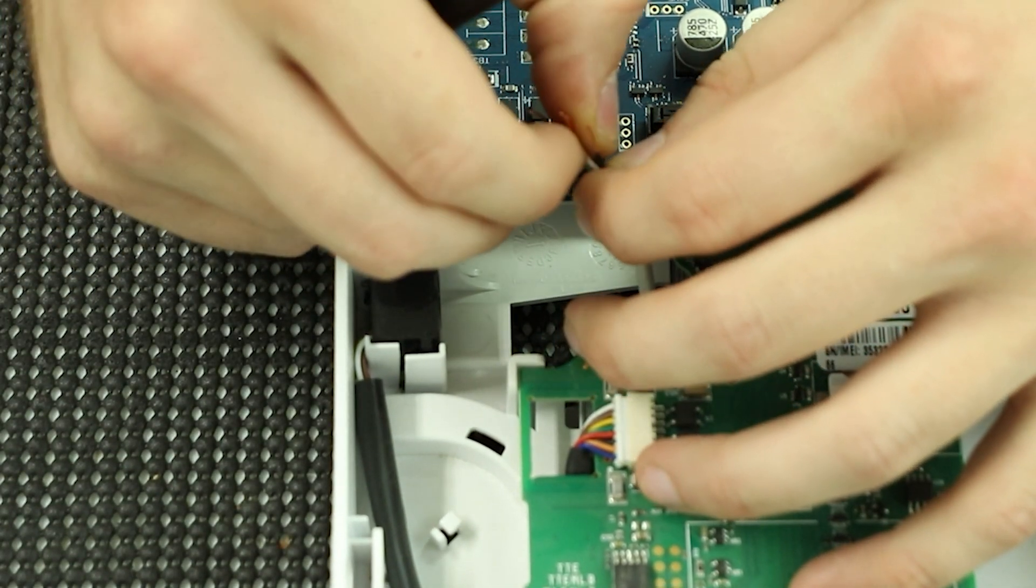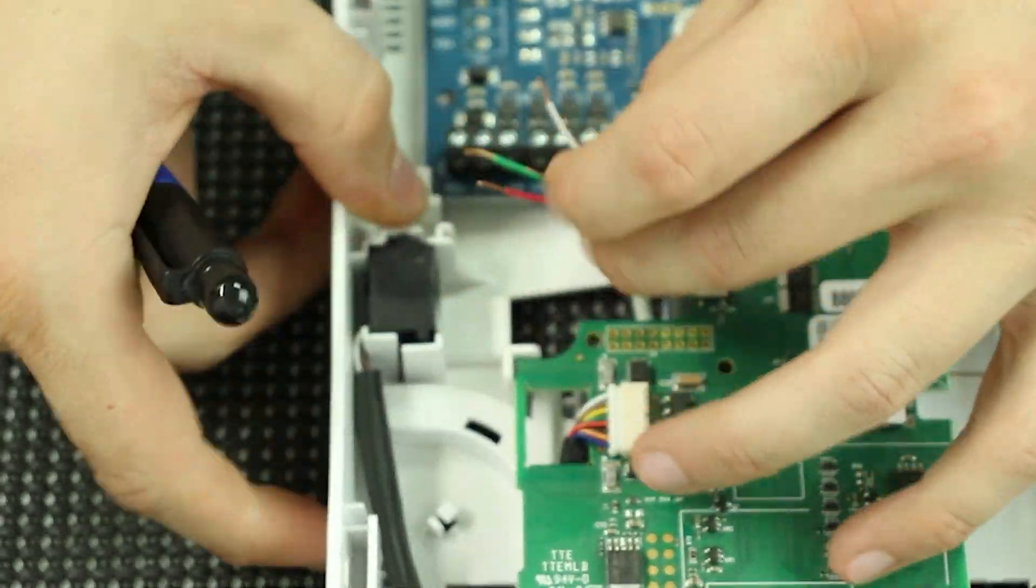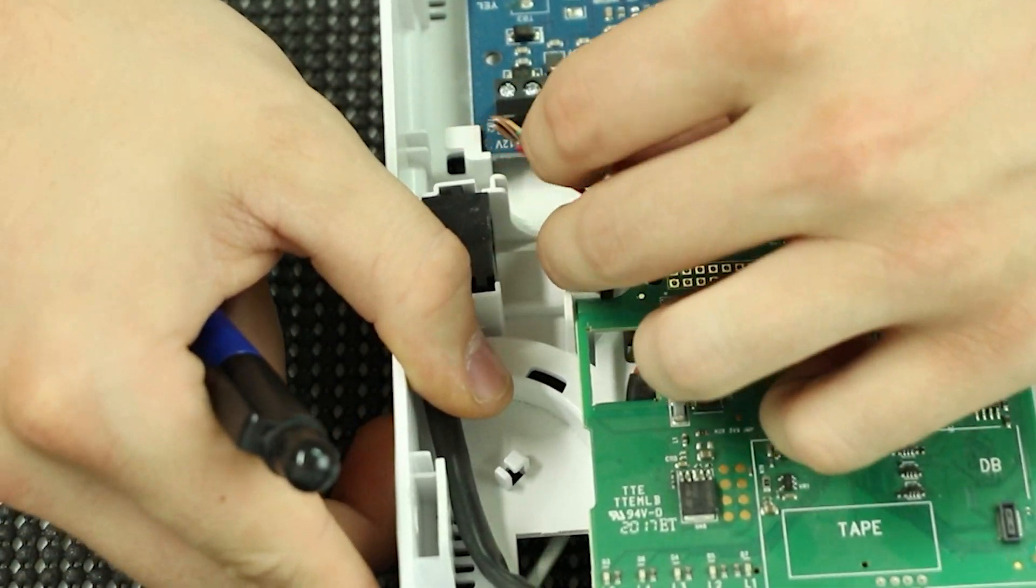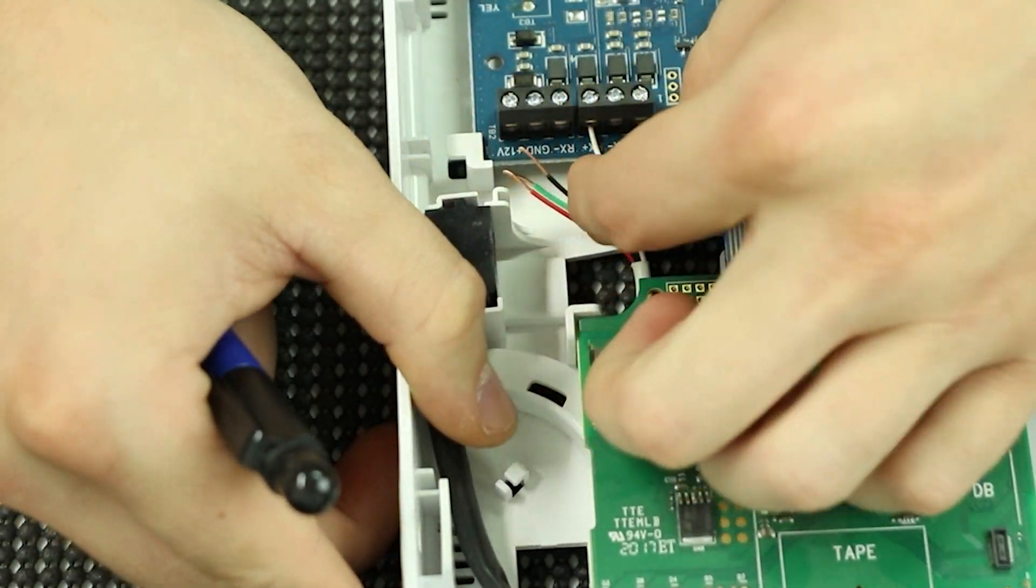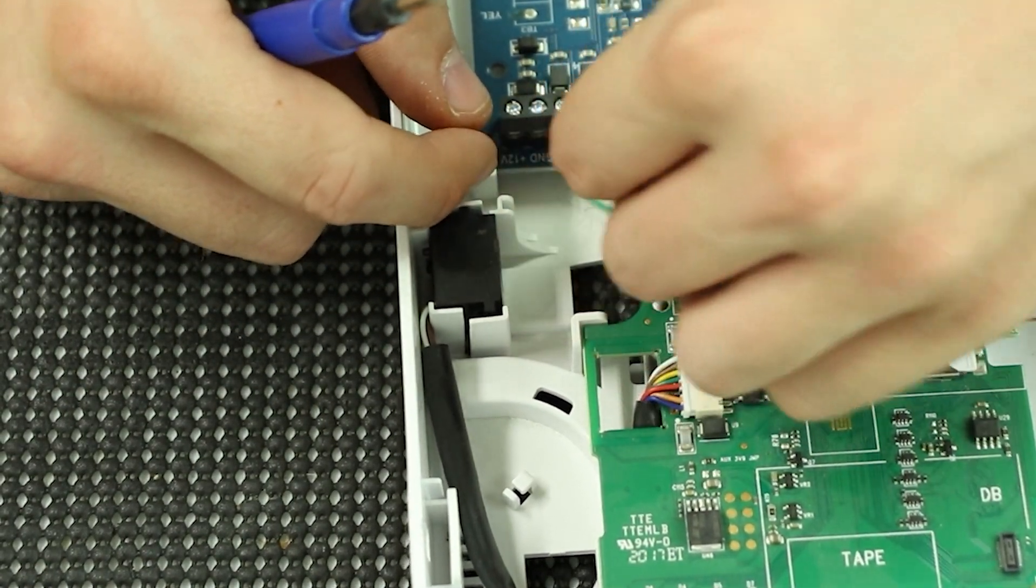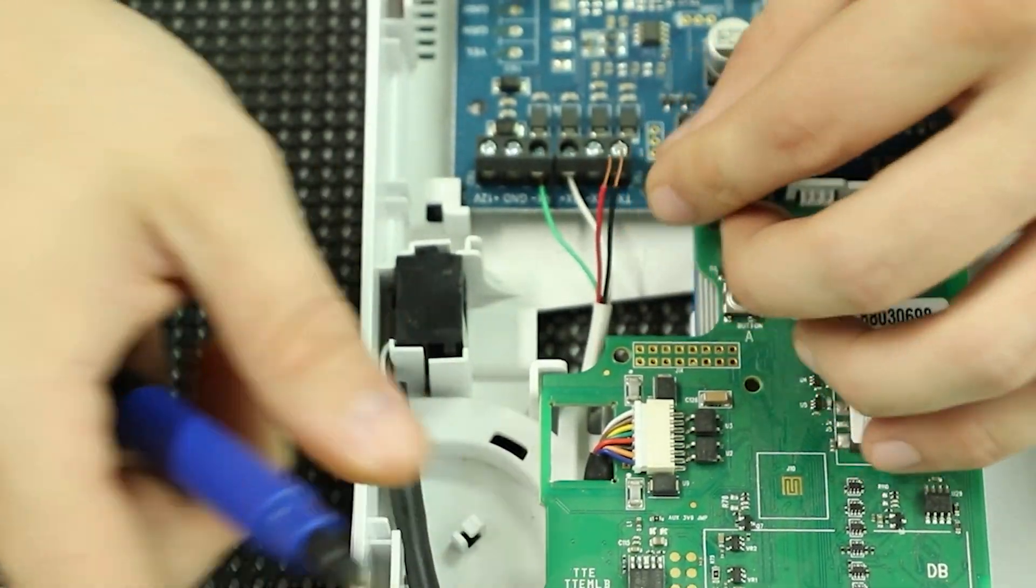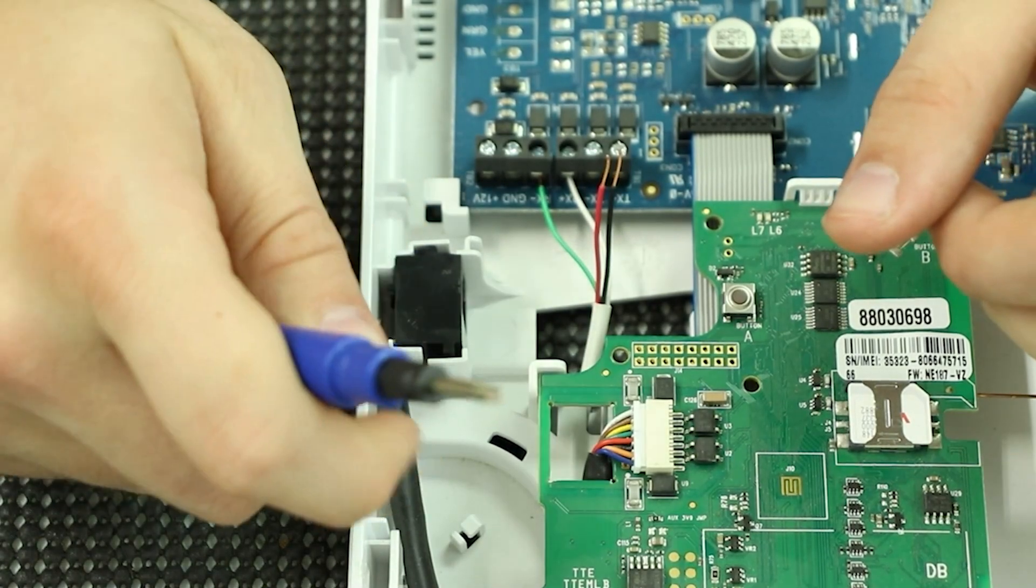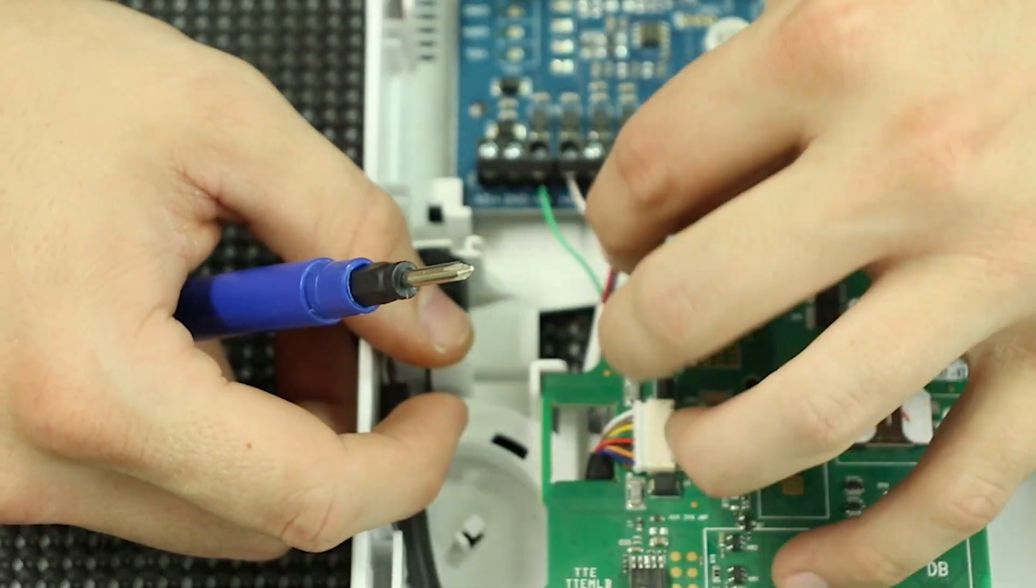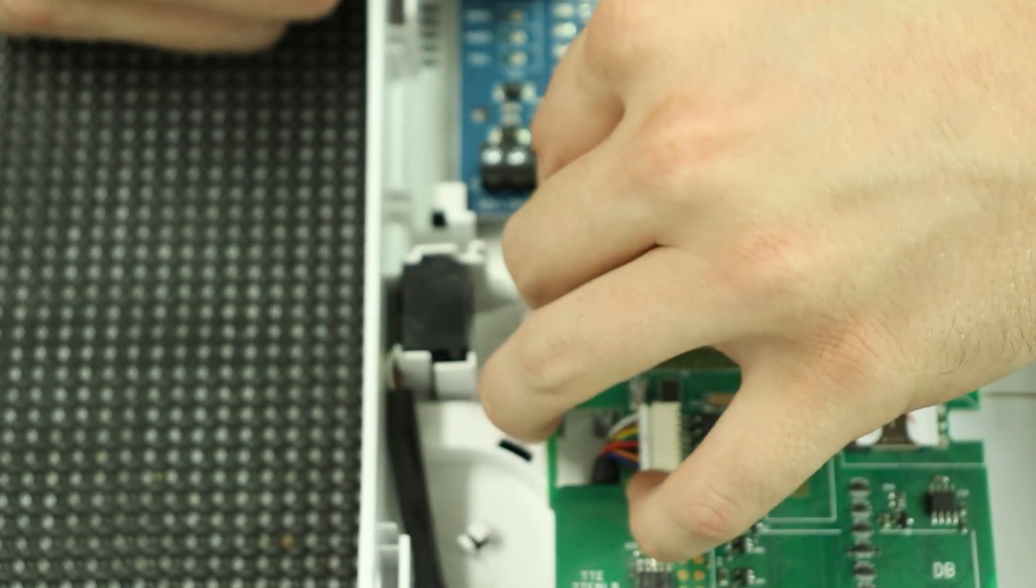White was TX positive so it is going to be RX positive on this one. Green was TX negative so it's going to be RX negative. Red on the daughter board was RX positive so it's going to go on TX positive on this one, and black is going to go on the TX negative.